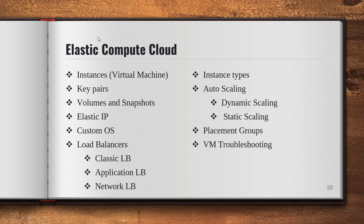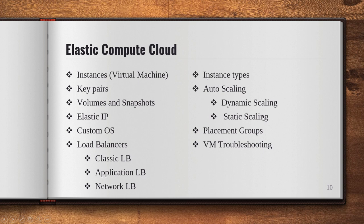Elastic Compute Cloud is a main topic of AWS. An instance is your virtual machine. Key pairs are used to access a virtual machine, and sometimes we need to convert PEM files to PPK files. Topics include: volumes attached to EC2, snapshots as backups, Elastic IP (your public IP), custom Amazon Machine Images, Load Balancer (Classic, Application, Network), instance types, auto scaling (dynamic and static), placement groups, and VM troubleshooting for status check failures.